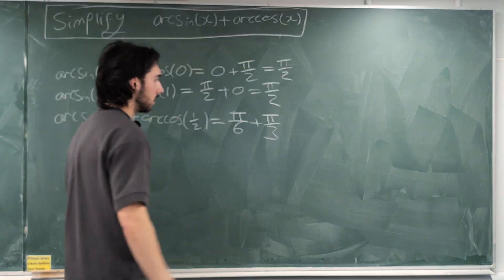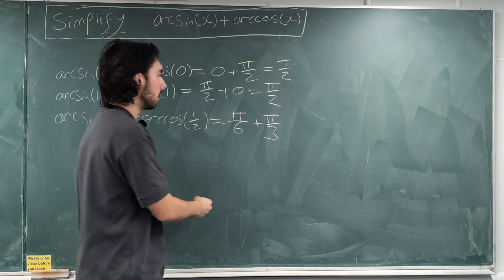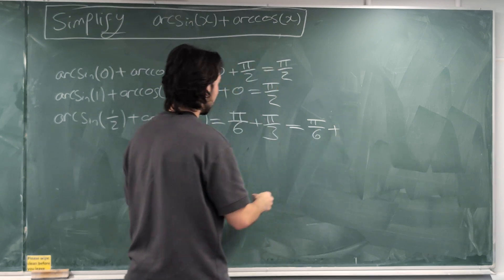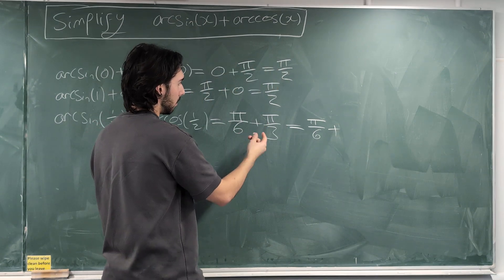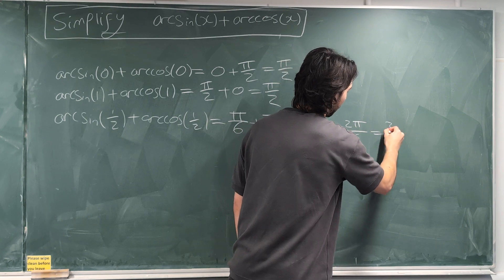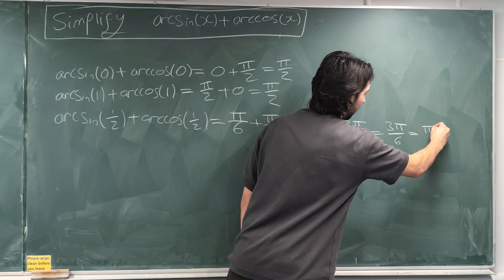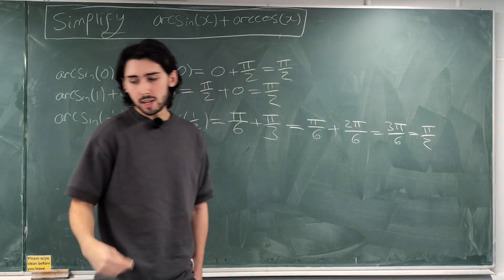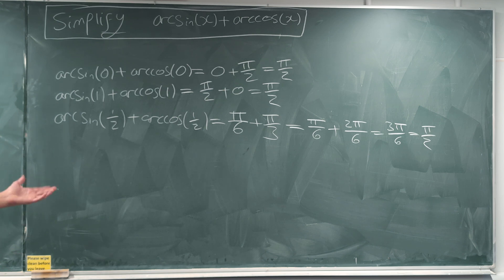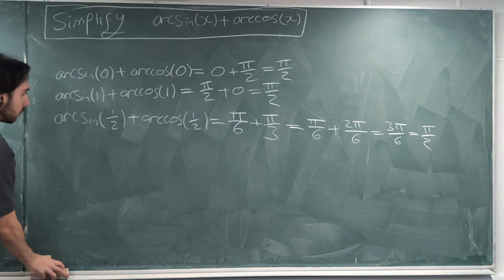But, guys, this is just π/2 again, okay? Because this is π/6 plus, multiplying top and bottom by 2, 2π/6, which is 3π/6, which is π/2. Every single value that we've plugged in has just given us π/2. Cool. So, you might be able to say, well, I think that it's going to simplify to π/2, which would be pretty sensible. But how do you prove it?